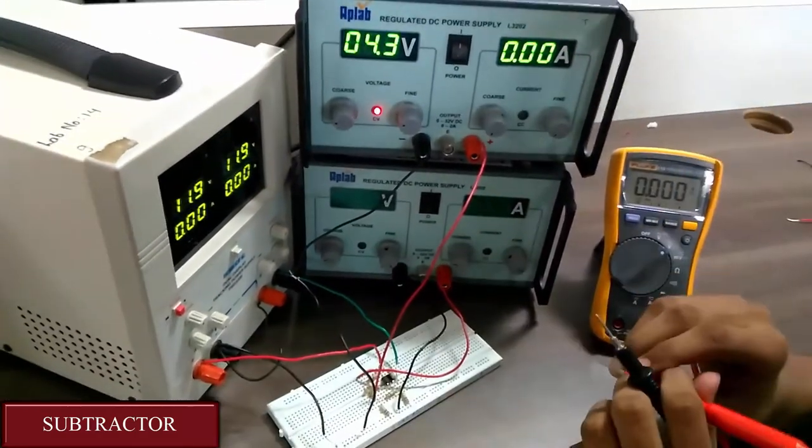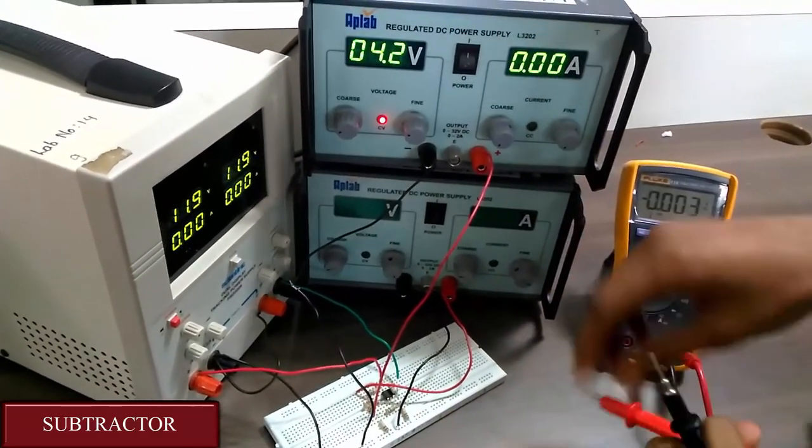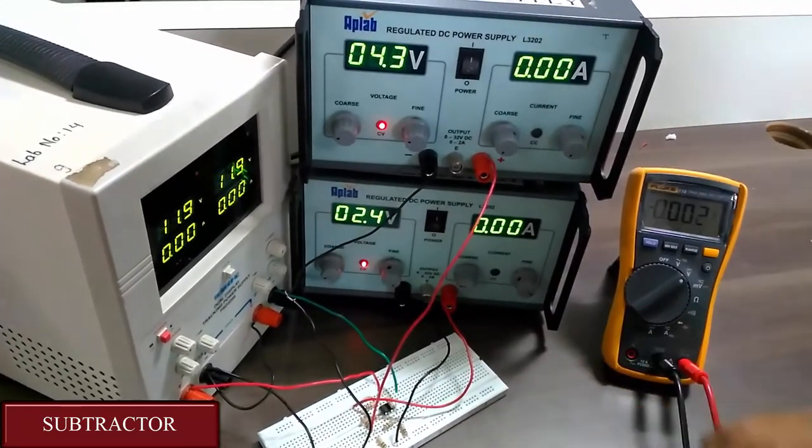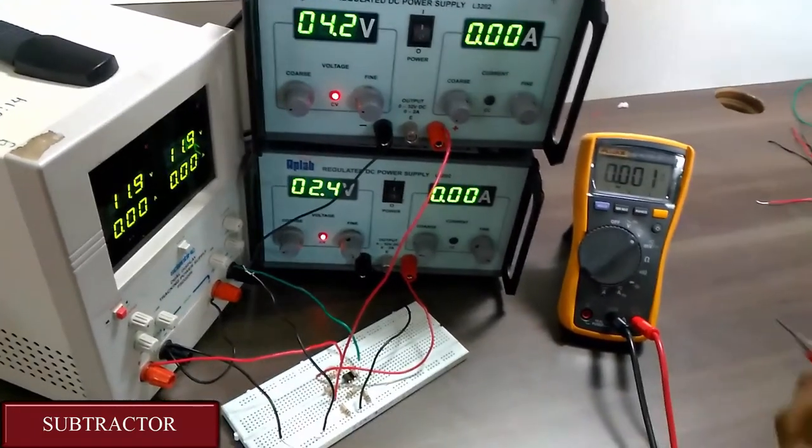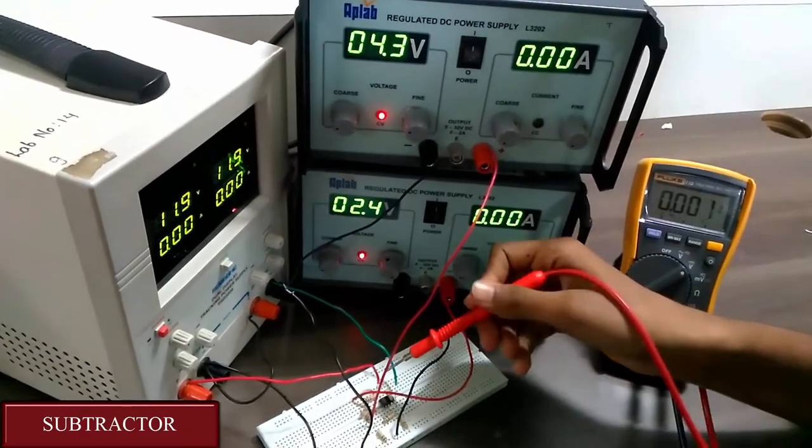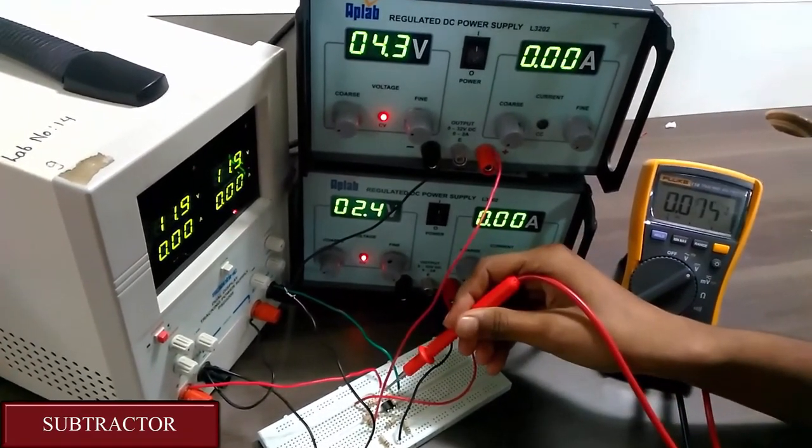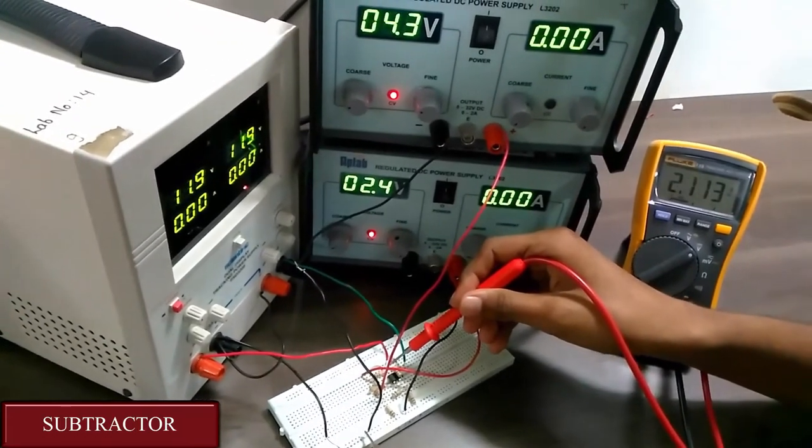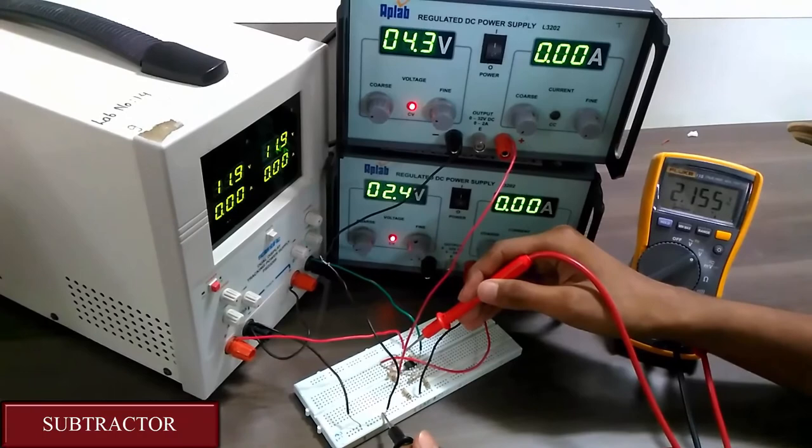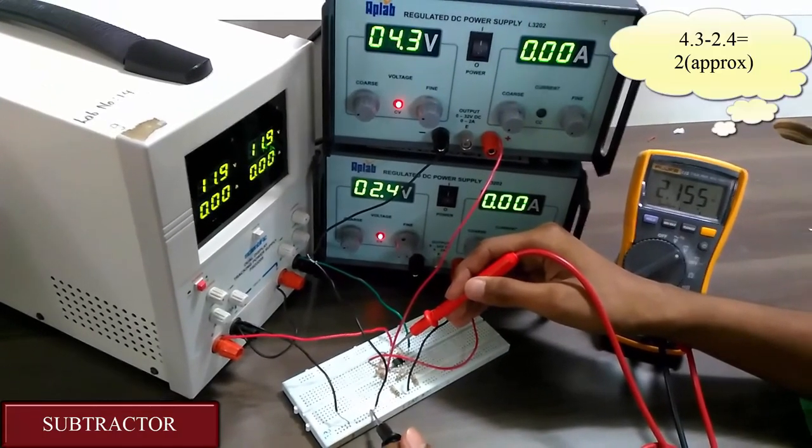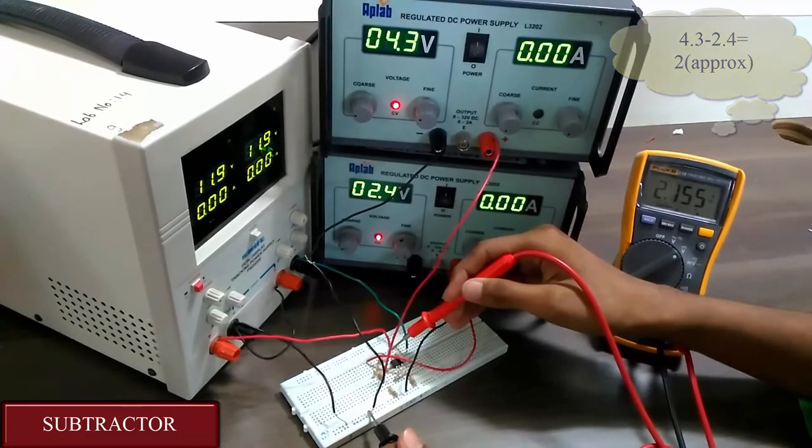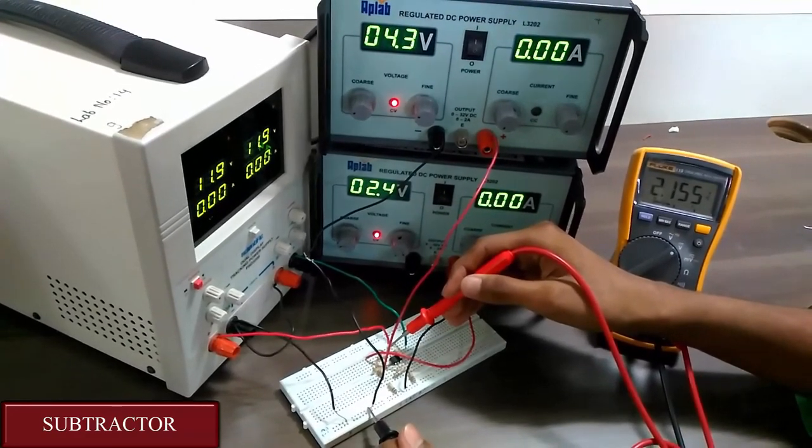The V1 value that we are giving is 4.2 volts and the V2 value that we are giving is 2.4 volts. So let us obtain the value of the output. The output would be obtained by measuring the voltage at the 6th pin and ground. Here we can see that the output obtained is 2.155 volts, which is approximately equal to 4.2 minus 2.4 volts. That is it for the subtractor. Thank you.